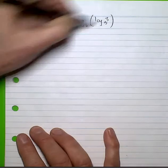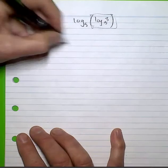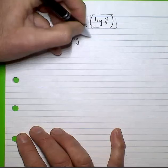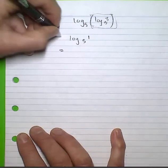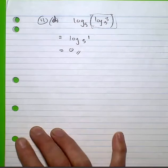Moving along to D, I hope you can see pretty quickly that that becomes log base 5 of 1, which by definition is equal to 0.